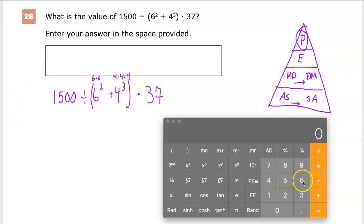So 6 times 6 is 36. So I'm just going to write that down below here. And 4 to the third is 4 times 4 times 4.